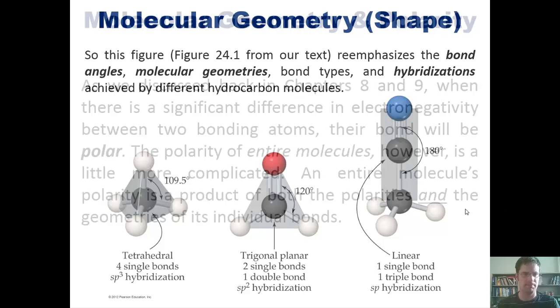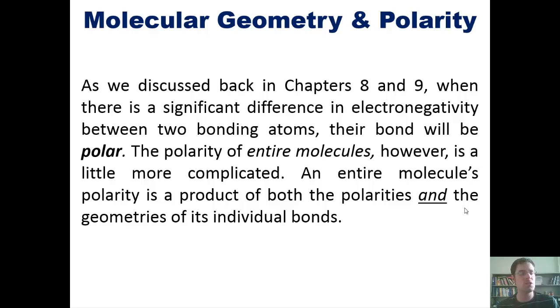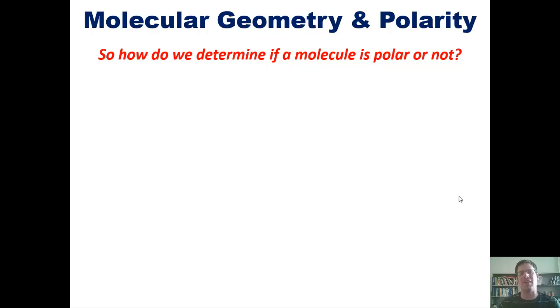Now to another subject. As we also discussed back in chapters 8 and 9, to which I'll link here, when there is a significant difference in electronegativity between two bonding atoms, their bond will be polar. The polarity of entire molecules, however, is a little bit more complicated. An entire molecule's polarity is a product of both the polarities and the geometries of all of its individual bonds kind of together as a whole. So how do we determine if a molecule is polar or not? We follow these steps.